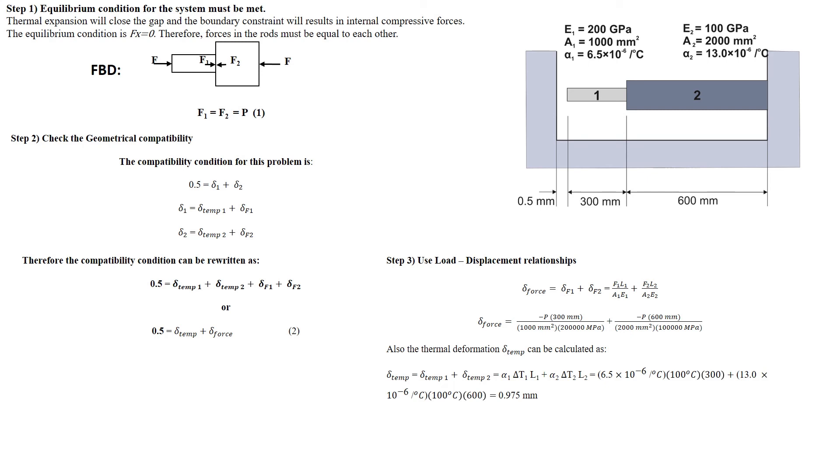Substituting into the compatibility condition equation 2 for delta force and delta temperature, the force P is obtained as 105 kN in compression.